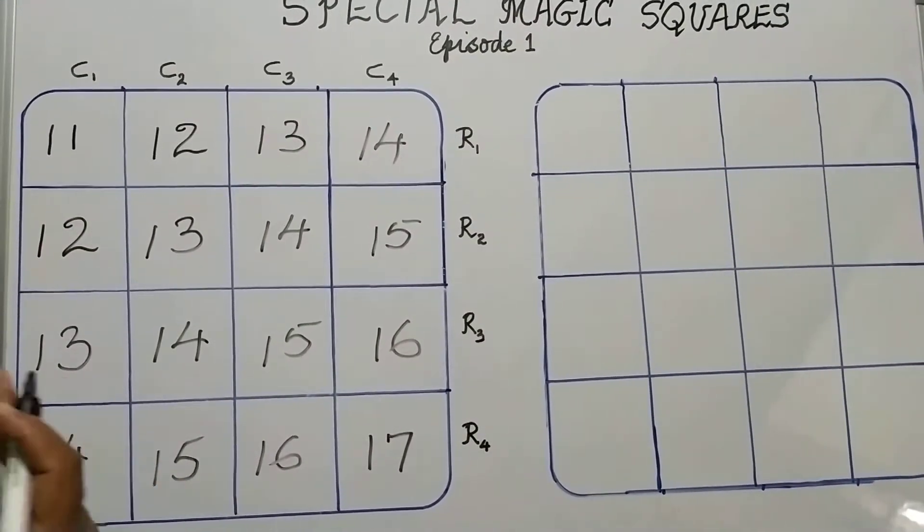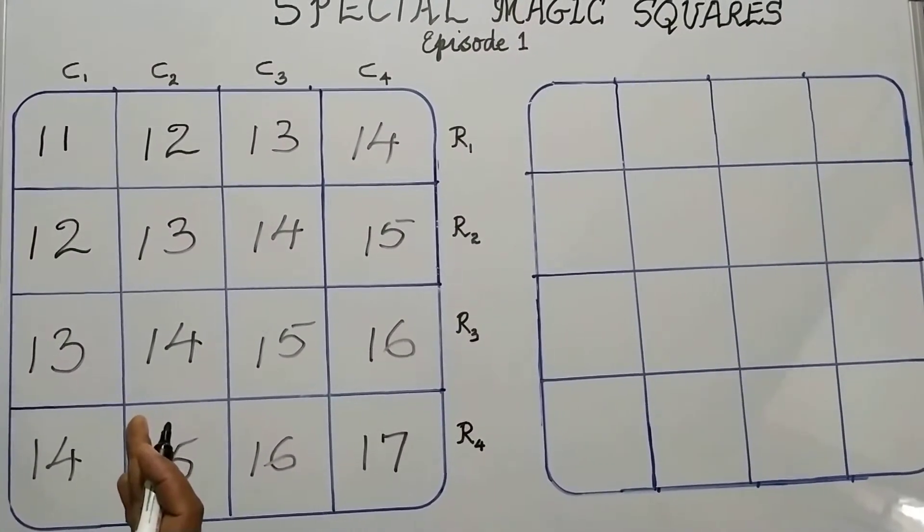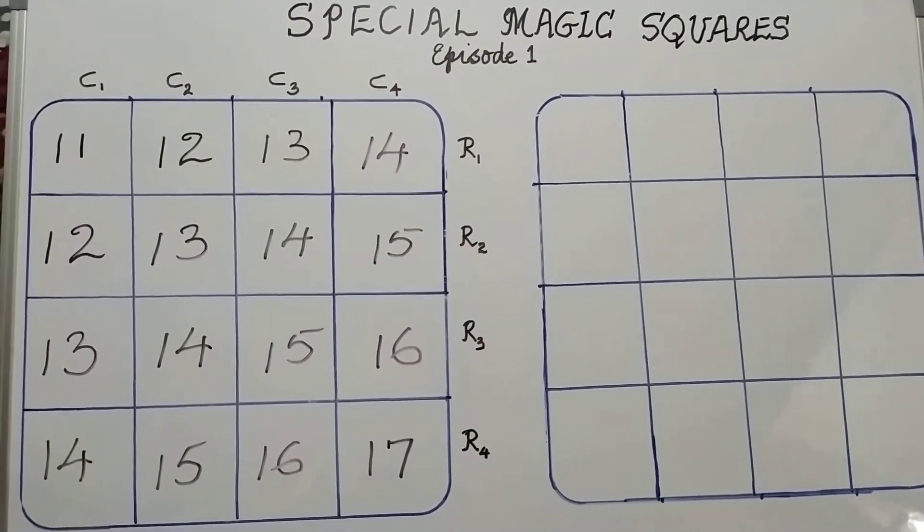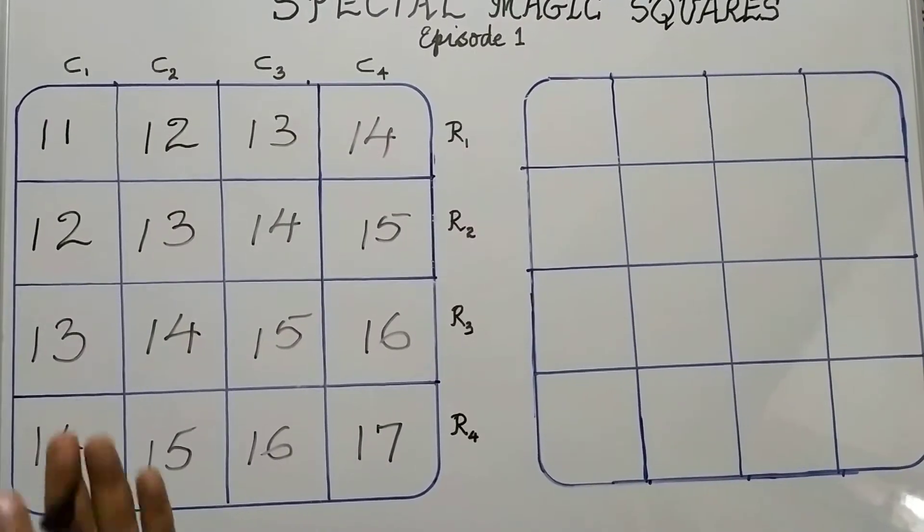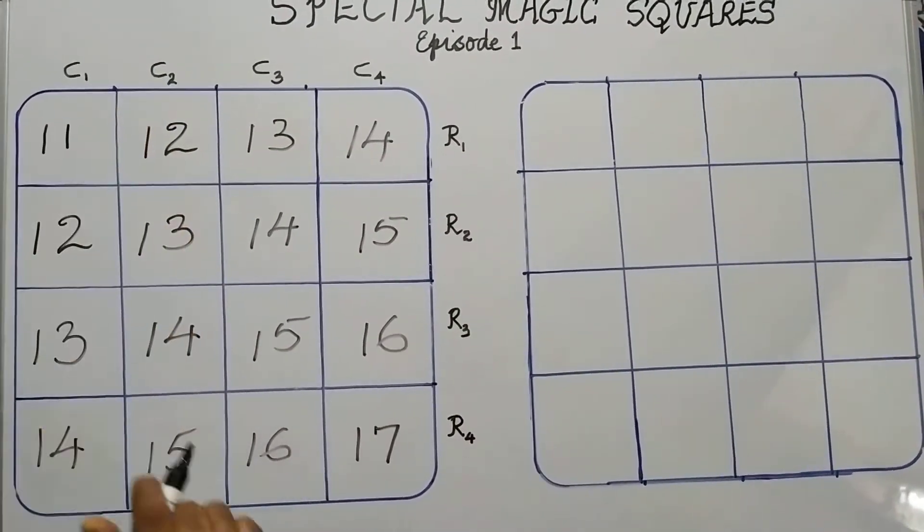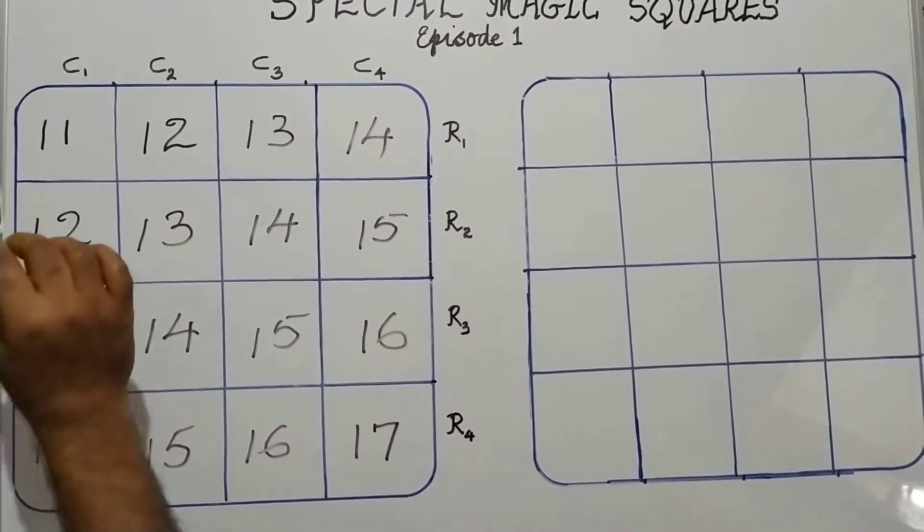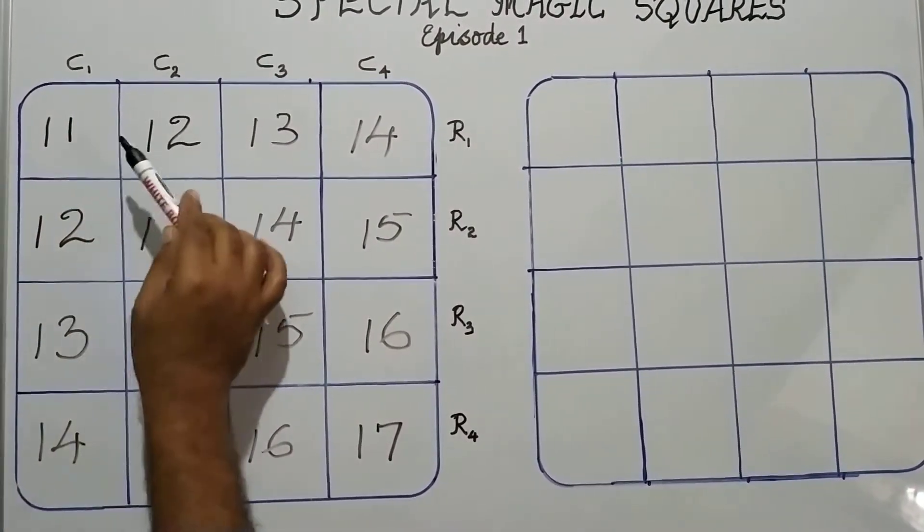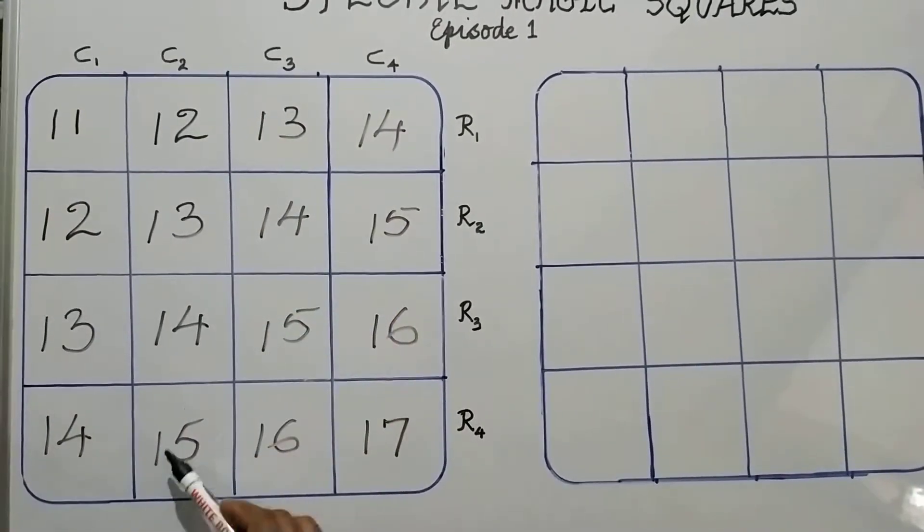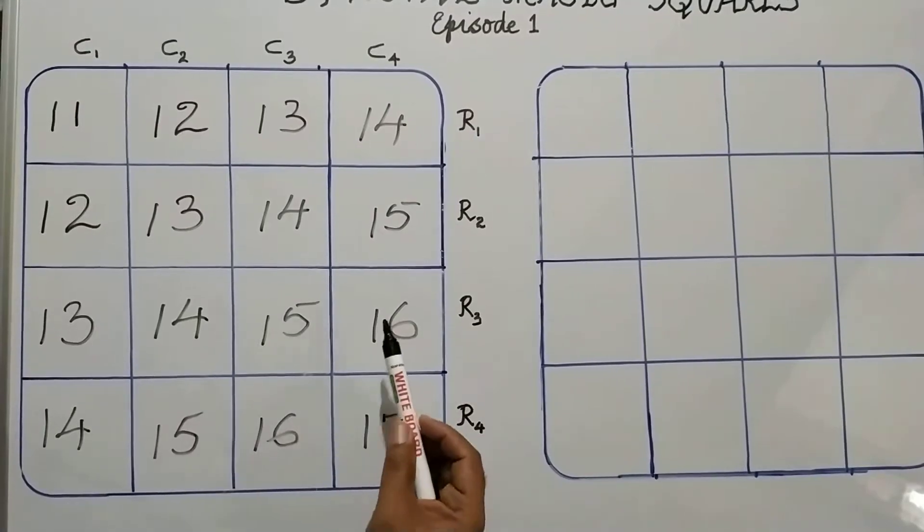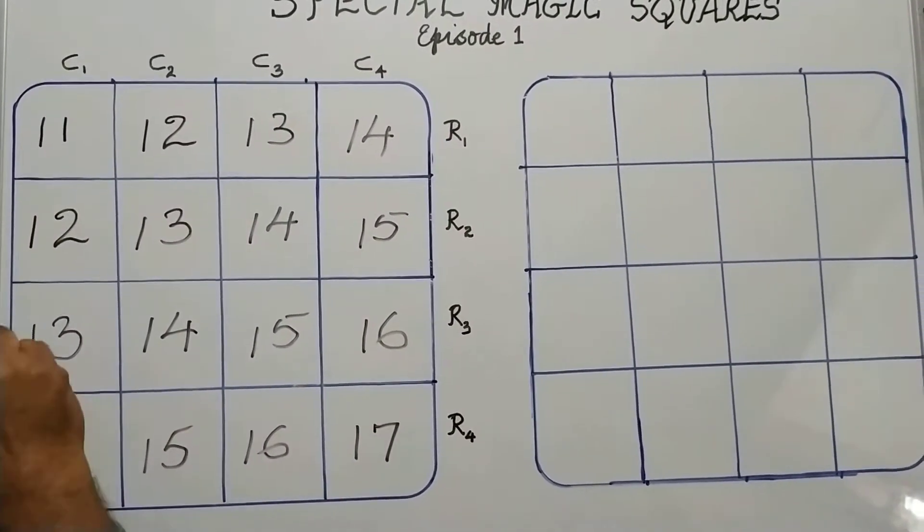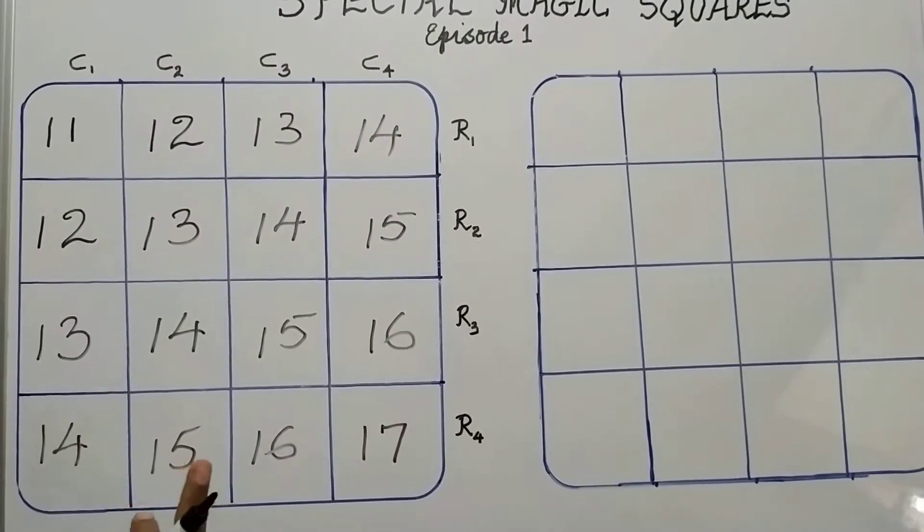Should you also choose the same numbers? Not needed. You can choose any 7 consecutive natural numbers. When you practice, you can try that. This is the base square that I have chosen. 11 is taken only once, 12 is twice, 13 is thrice, 14 is 4 times, 15 thrice, 16 twice, and 17 once. So, 11 and 17 are taken only once.